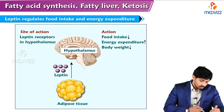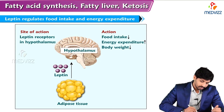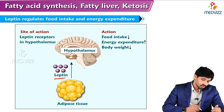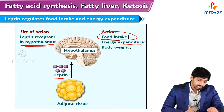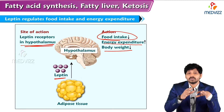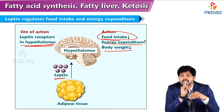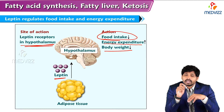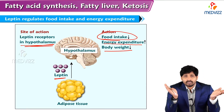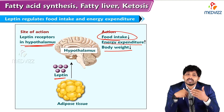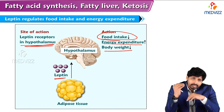Looking at the diagram showing leptin regulating food intake and energy expenditure: adipose tissue secretes leptin, which acts on the hypothalamus. Leptin receptors in the hypothalamus, when activated, decrease food intake and increase energy expenditure and body weight regulation. When the concentration of leptin increases, it acts directly on the hypothalamus, depriving the hunger center - so the person is not willing to take food and food intake is reduced. At the same time, leptin directs the hypothalamus to activate metabolically active hormones that increase energy expenditure and maintain body weight.